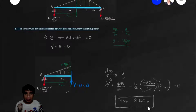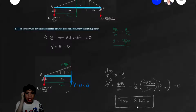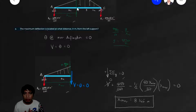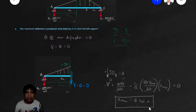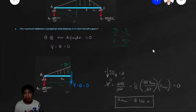I want to warn you: if the assumption is wrong and the result comes out as 11-point-something or 12-point-something, that means the maximum deflection is not in the first segment but in the other side. If that happens, you need to repeat the whole process for the second segment. Don't just use the 12-point-something value obtained from the first-segment assumption — that would be wrong.